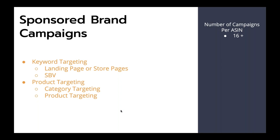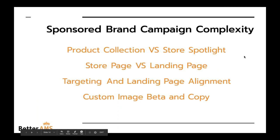One of the things we're going to look at is: if we're running those keyword strategies discussed earlier, we need to figure out if a landing page or store page performs better, and we need to look at running sponsored brands video with the exact same keyword targeting strategies. For product targeting with any sponsored brand campaigns, you need to be running category targeting with all the research methods mentioned earlier, as well as product targeting.